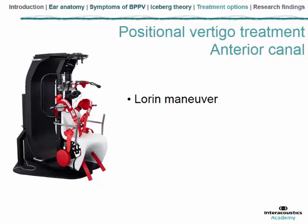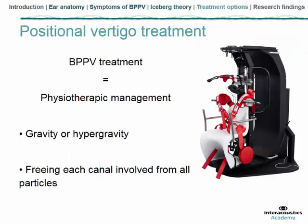The head is placed in the most downward position, permitting particles to go from the cupula to the deepest point of the canal. Then the patient is moved in steps of 30 degrees, with 30 seconds waiting at each step. It is very important to free each canal involved, because if you miss lateral canal involvement at the same time as posterior canal involvement, the patient will no longer have positional vertigo but will keep some unsteadiness and dizziness that is sometimes very disabling.